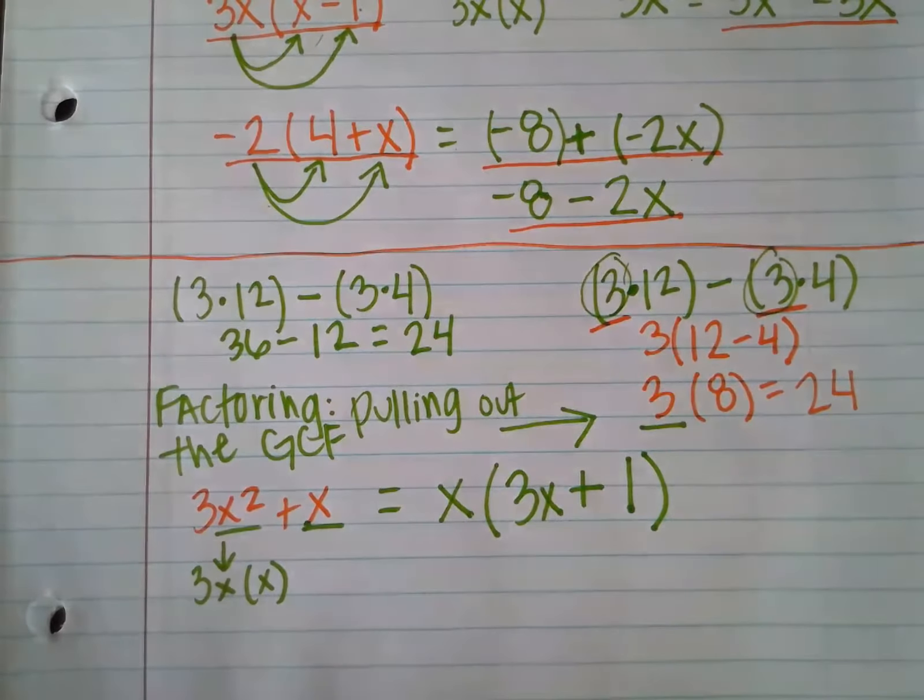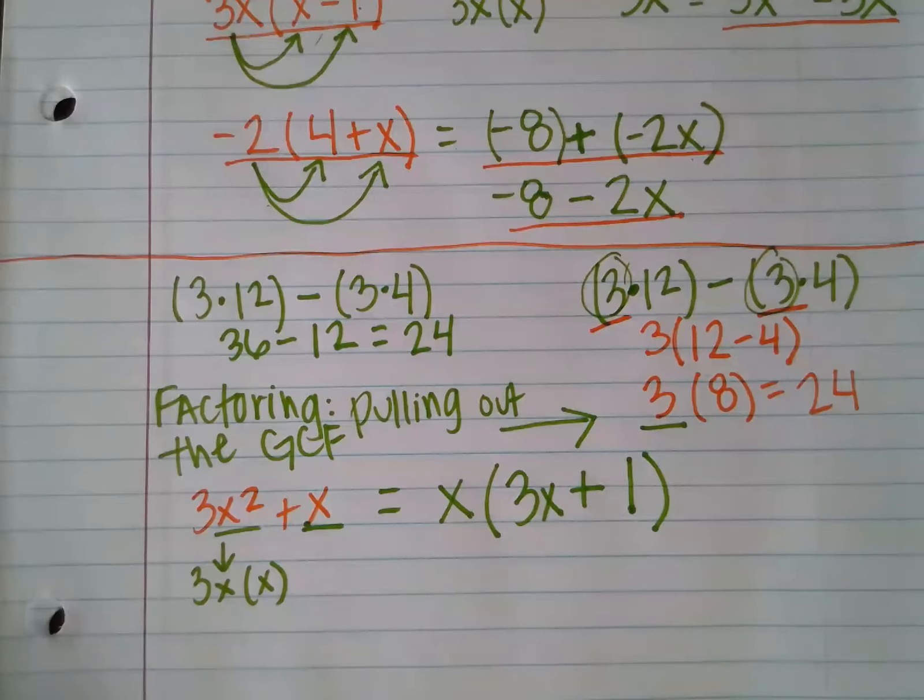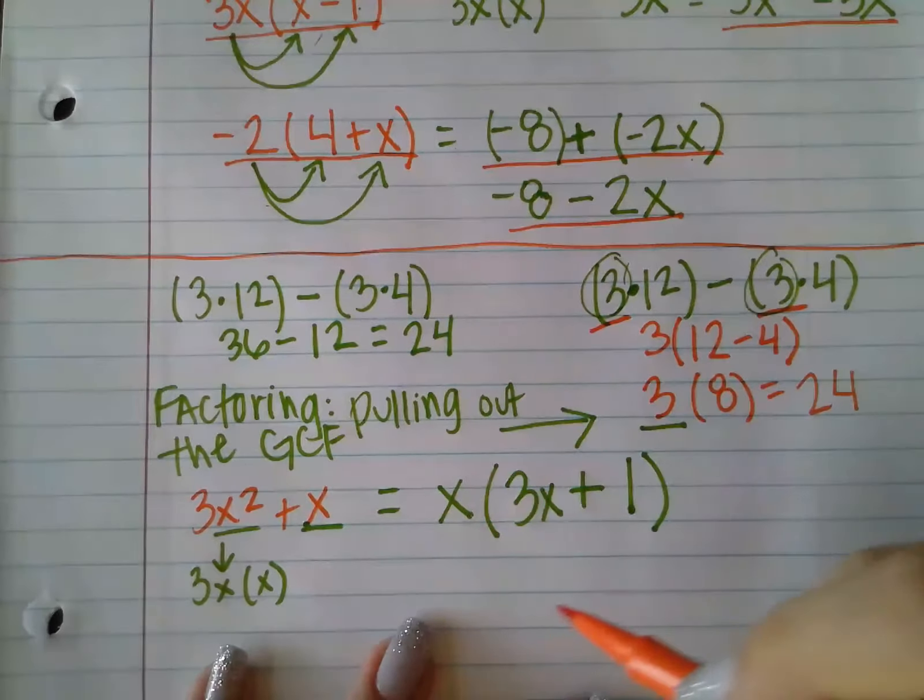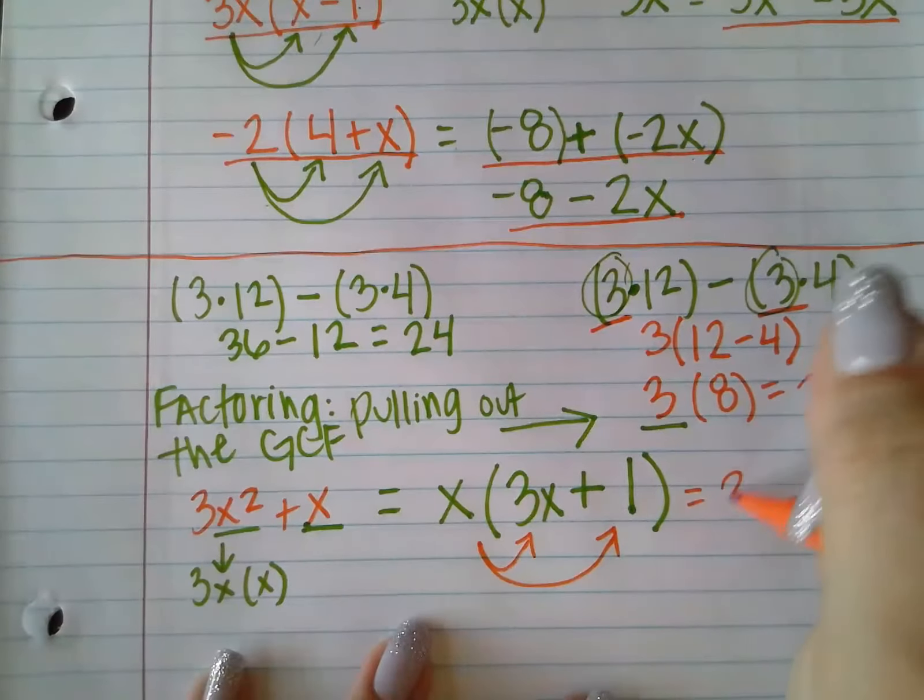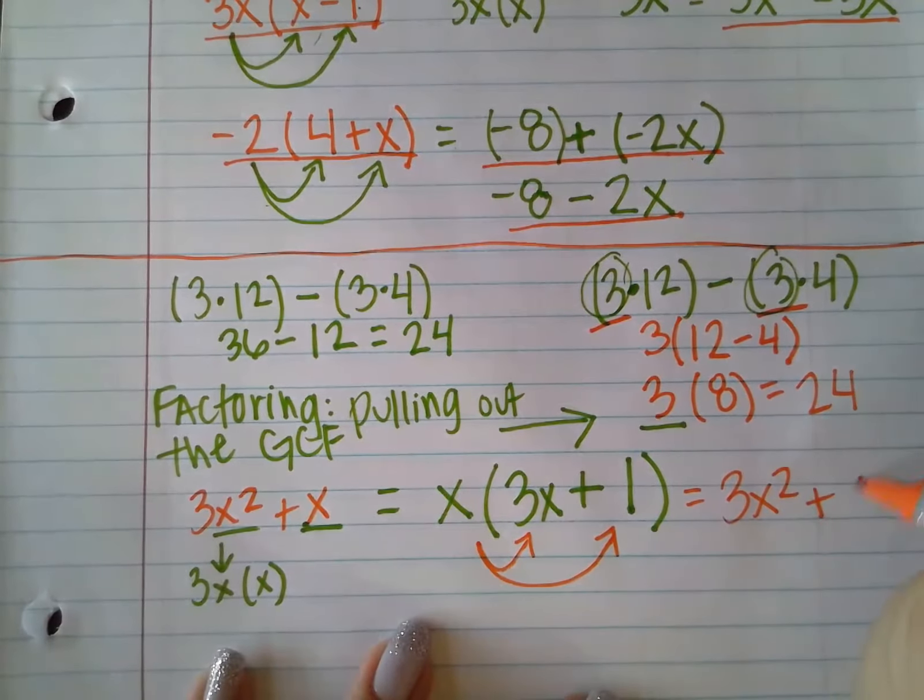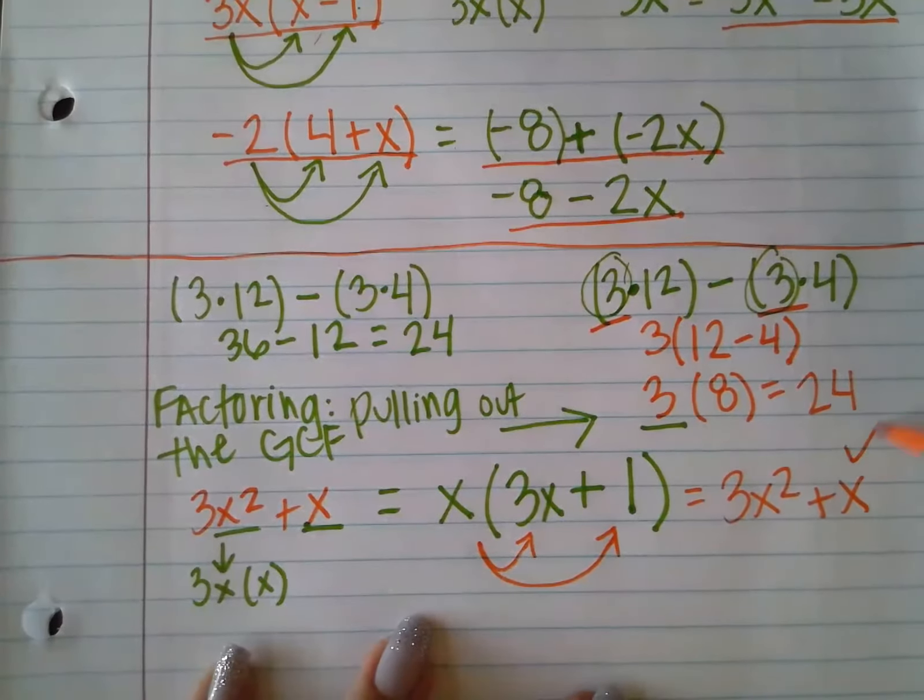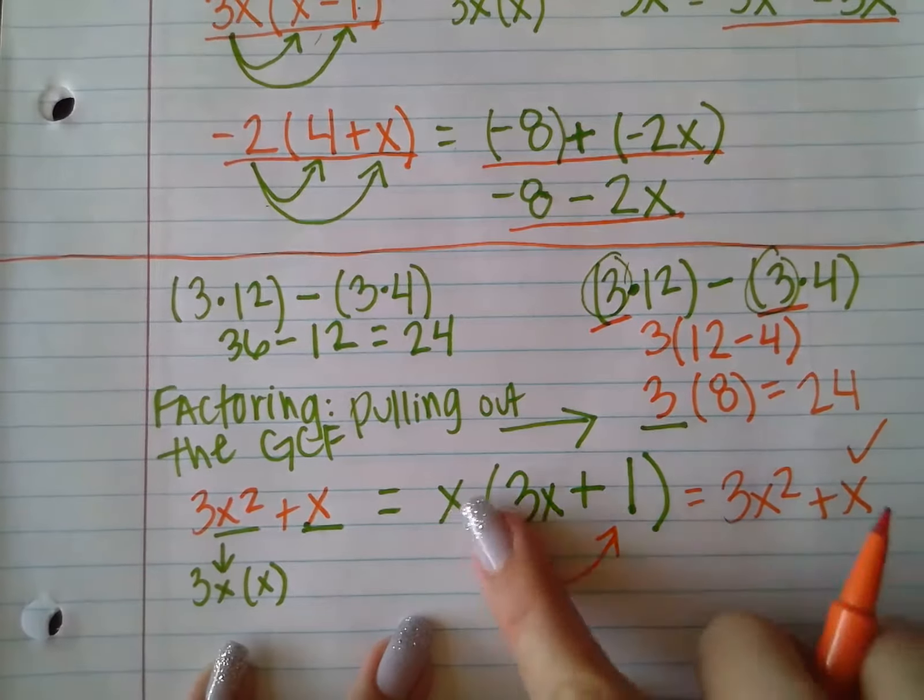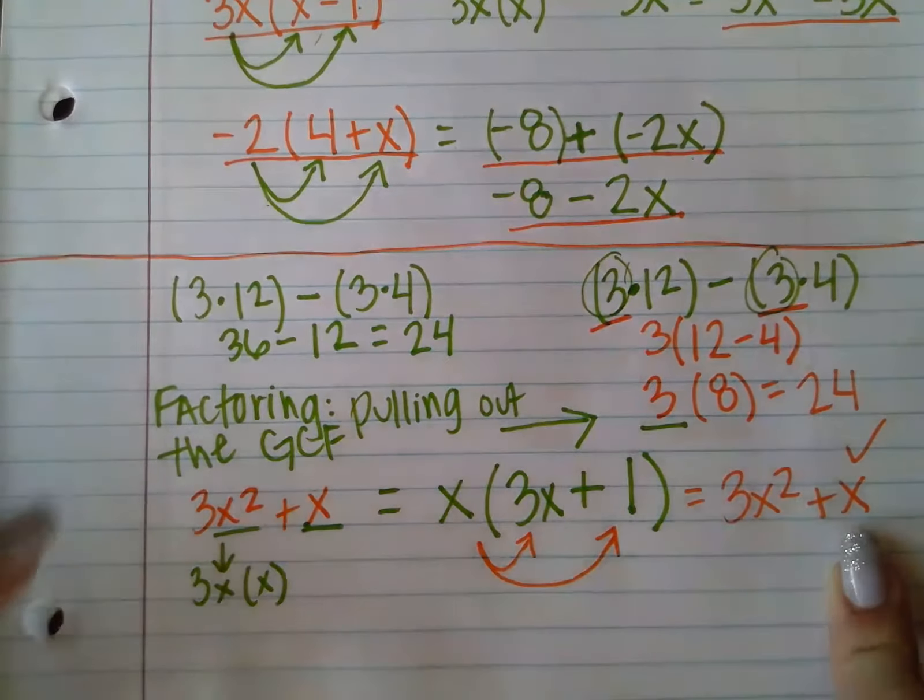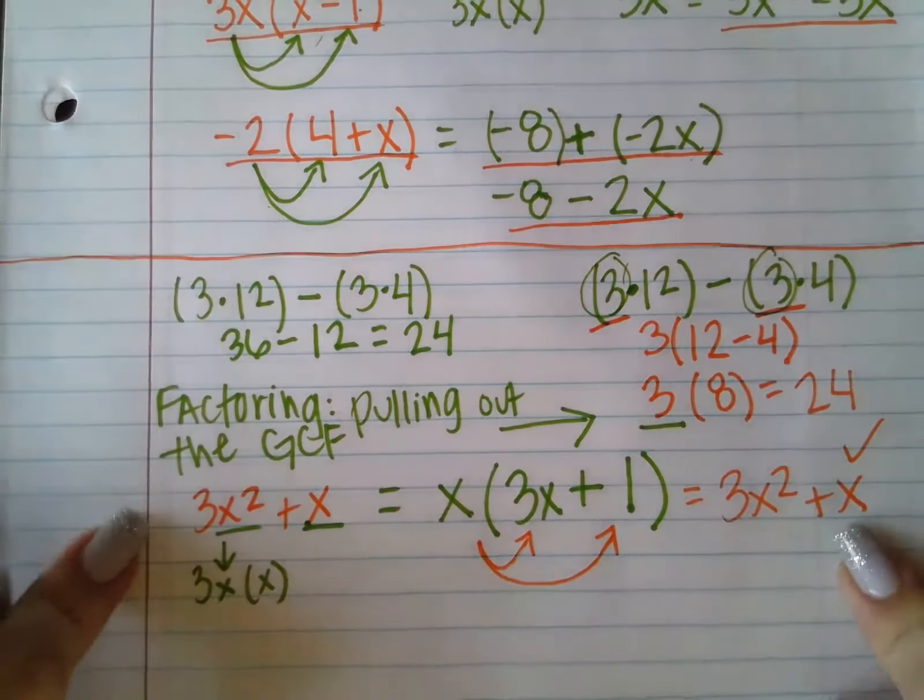And then a really easy way to check to see if you factored an expression correctly is by just doing the opposite, doing the distributive property, going back and distributing, and making sure you end up with what you originally started with, which is what we did. So 3x times x is 3x squared, x times 1 is x. So we end up with the same thing that we started with.